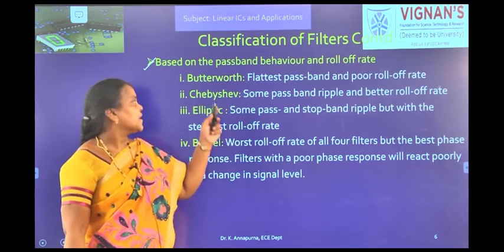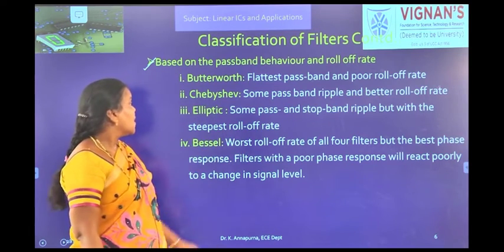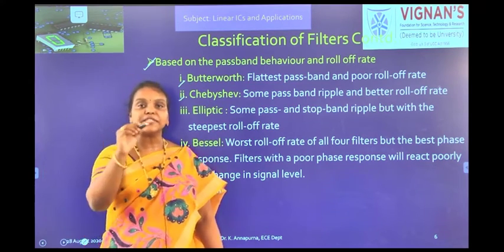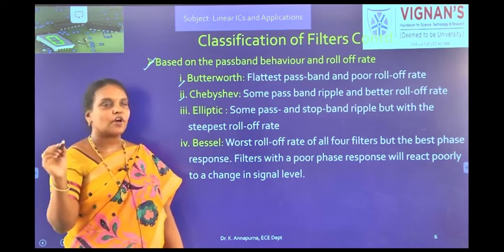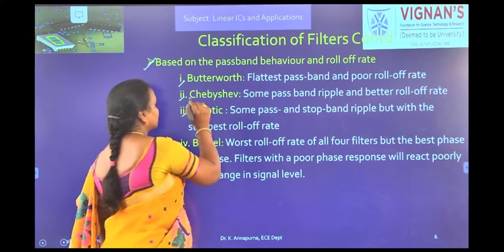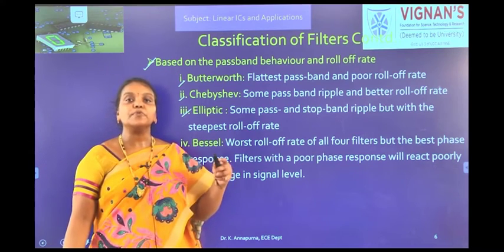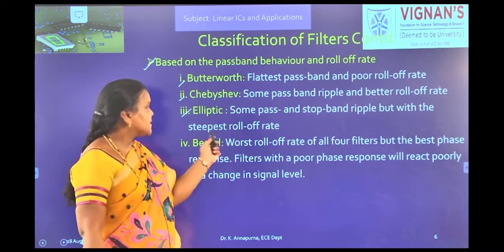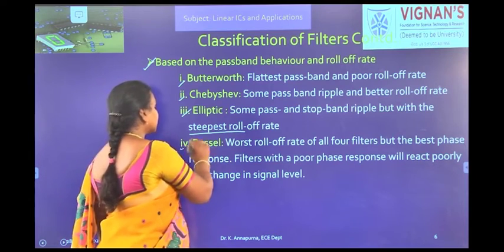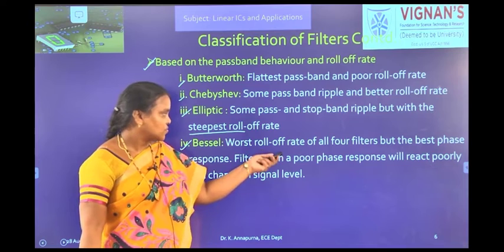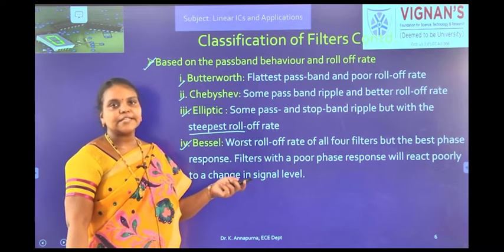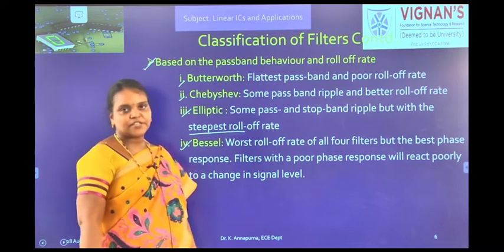Chebyshev has some ripples in the pass band but an improved roll-off compared to Butterworth. Next, elliptic filters have ripples in the pass band as well as the stop band, with the steepest roll-off — that is, this is the best roll-off. The next one is the Bessel filter, where the roll-off rate is the worst of all four filters, but it has the best phase response — that is, where we need the best phase response we go for Bessel filters.